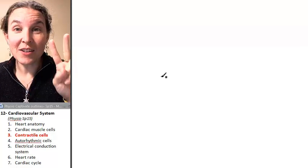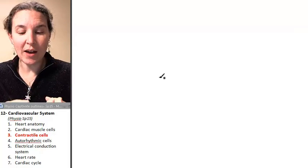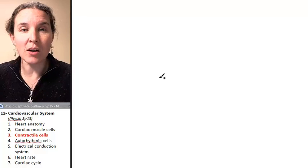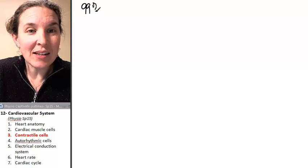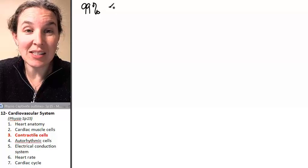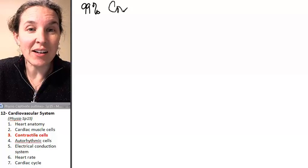Two kinds of cardiac muscle cells. We have contractile cells and auto-rhythmic cells. 99% of all cardiac muscle cells are contractile.